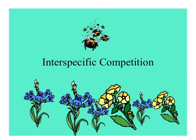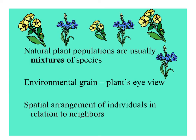Few plant species grow only with their own species. In the real world, there's competition between species — interspecific competition. Natural plant populations are mixtures of not only two, but multiple species. From the plant's eye view, the spatial arrangement of individuals around it is important, and that's what affects interspecific competition.